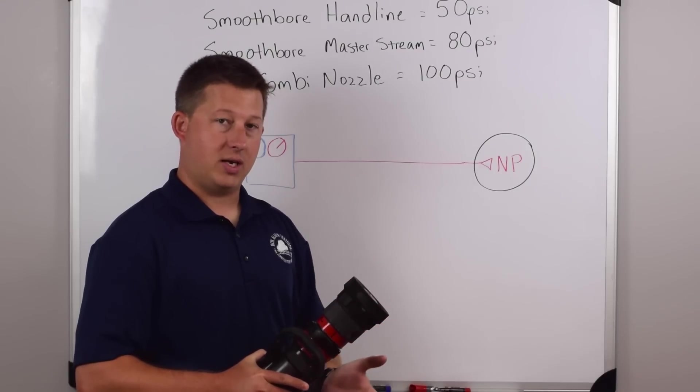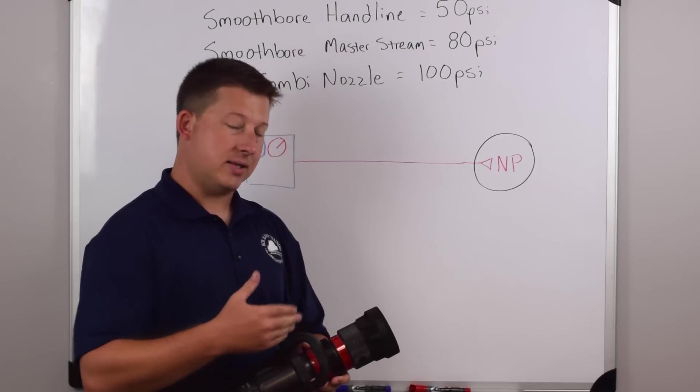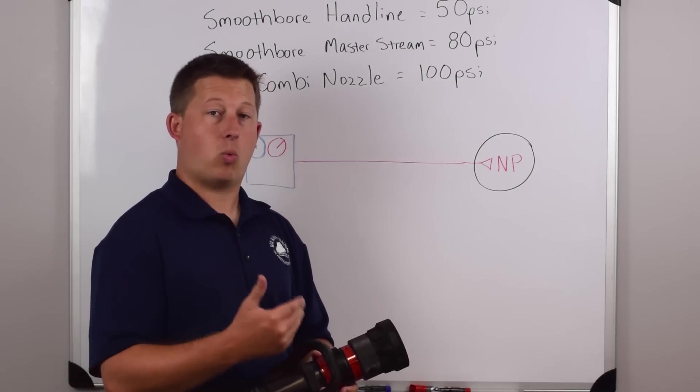So when we do that, as the hole gets bigger, we have to increase RPM to deliver the same amount of pressure because the hole just got bigger. We're trying to maintain the same pressure, but now we're moving more water through the nozzle.